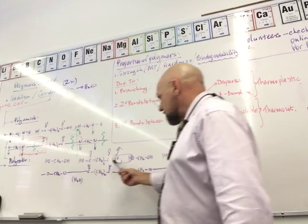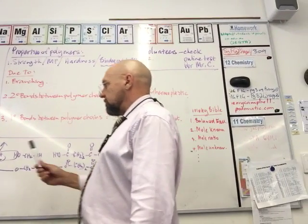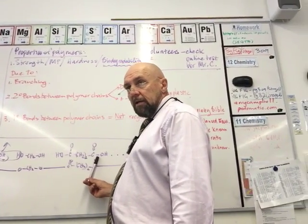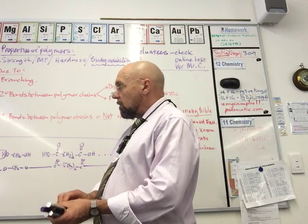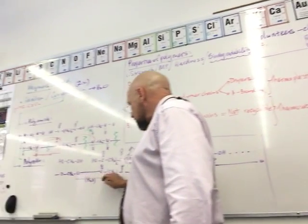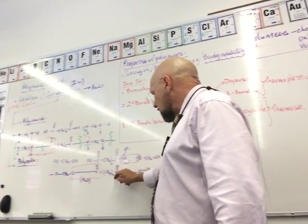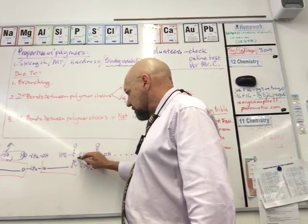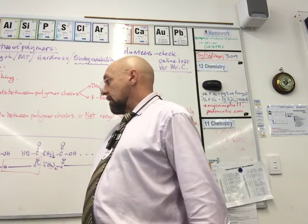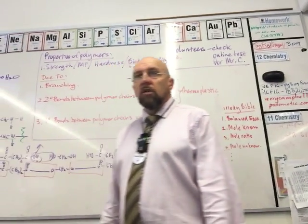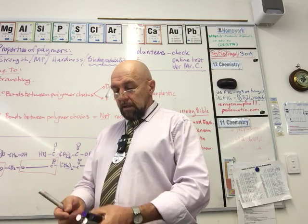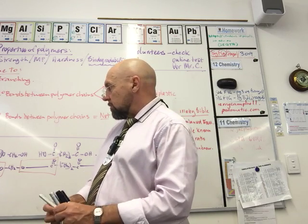Here it is — I've put the monomers in twice: here's an alcohol, here's a carboxylic acid, here's an alcohol, here's a carboxylic acid. We've got to find the repeating unit and also find the link. Here's the link — there is my ester link — and there it is repeated along the chain. You have to identify what sort of polymer it is; this is a condensation polymer in a category called polyester because it's got ester links in the chain.